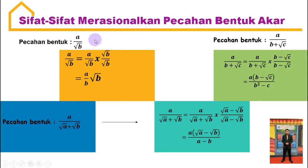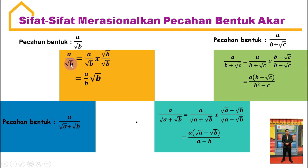Sifat yang pertama, ada pecahan yang berbentuk A per akar B. Cara merasionalkannya: A per akar B itu sama dengan A per akar B dikali akar B per akar B. Akar B per akar B ini bernilai satu, jadi tidak mempengaruhi nilai dari pecahan tersebut. Maka hasilnya sama dengan A per B akar B.